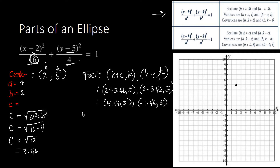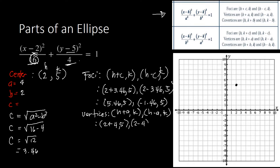Now let's move on to the vertices. We use h plus a, comma k and h minus a, comma k. Plugging in: (2 plus 4, 5) and (2 minus 4, 5). Simplifying: (6, 5) and (negative 2, 5). Those are the coordinates of the vertices.